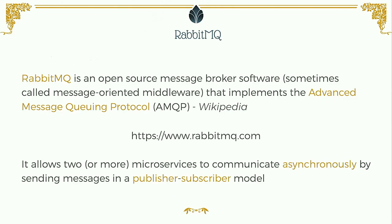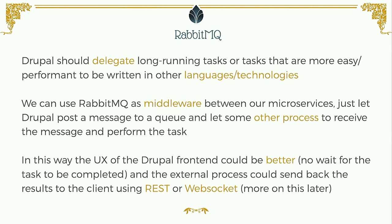Let's start analyzing how we built this system, starting with RabbitMQ. RabbitMQ is an open source message broker that implements the Advanced Message Queuing Protocol. It allows two or more microservices to communicate asynchronously by sending messages in a publish-subscribe model — someone posts a message and other components consume those messages to perform a task. Drupal should delegate long-running tasks to a queue, so we can use RabbitMQ as middleware between our microservices.